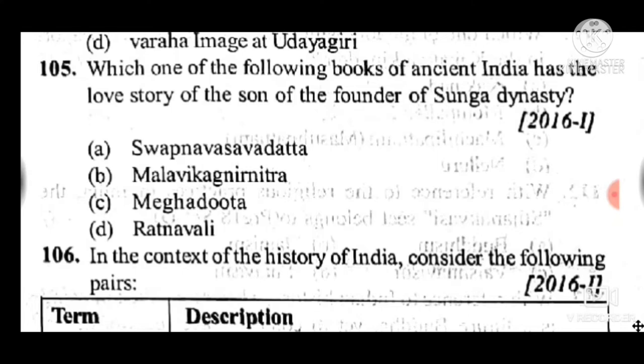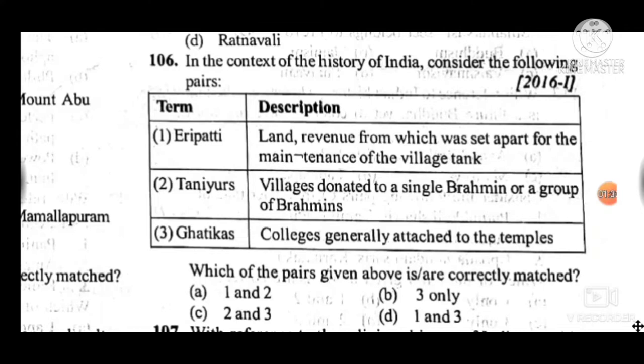Question 106: In the context of the history of India, consider the following pairs. Answer is — one and three; only options one and three are correct.